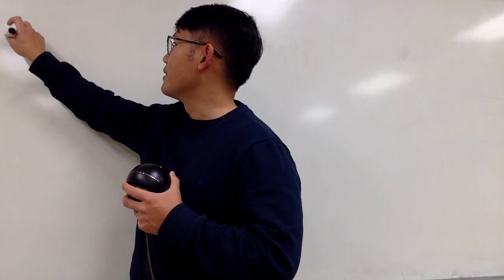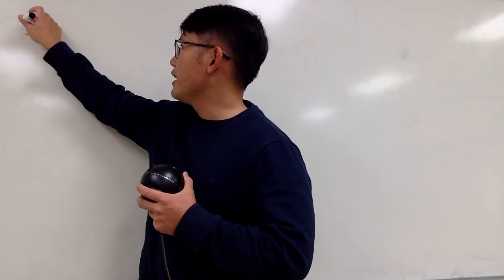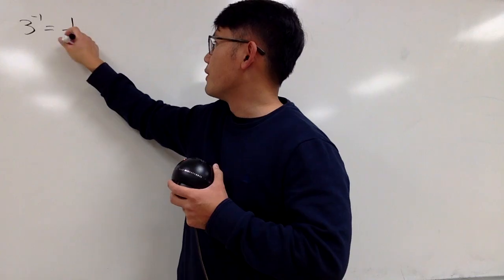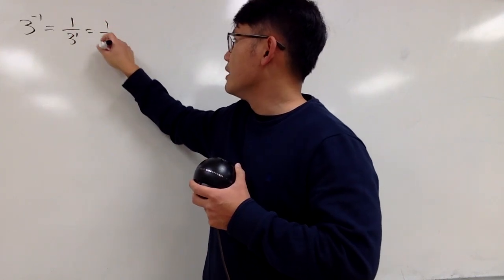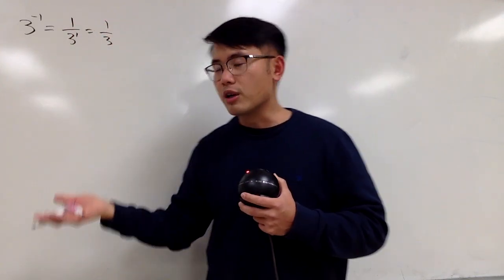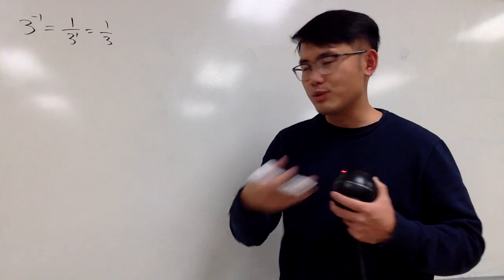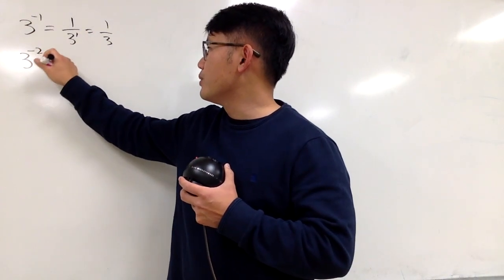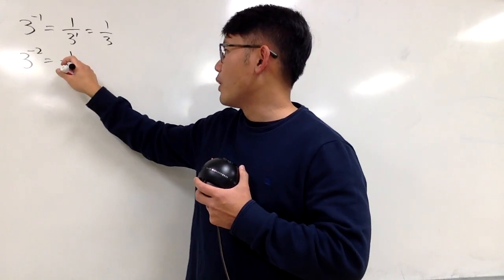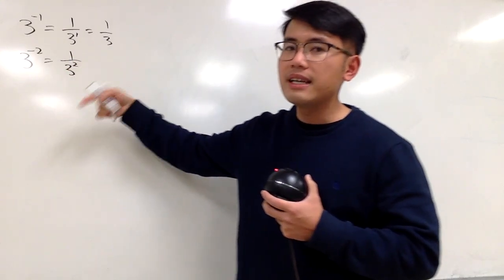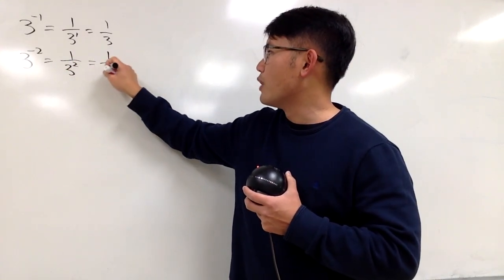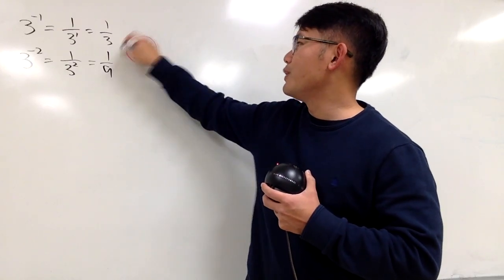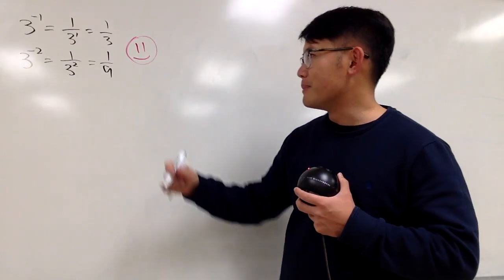Let me write this down. Let me just pick a number, let's say 3, and put a negative 1 right here. As we all know, this means the negative 1 power, and this is just 1 over 3 to the first power, which is 1 over 3. I talked about negative exponents in the past, so you can check that out. No big deal. And if you have 3 to the negative 2, of course it's the same thing, but you have 1 over 3 squared, which is 1 over 9. So these two right here, very easy, so I give them a happy face.